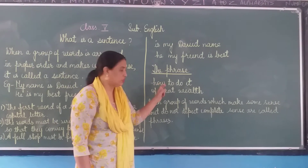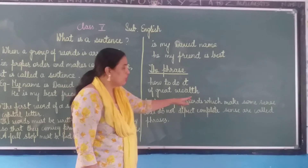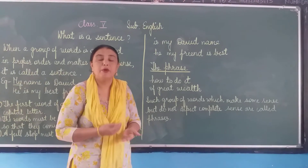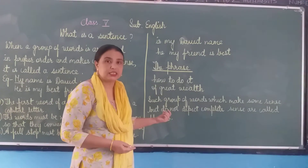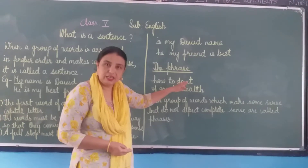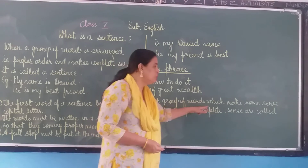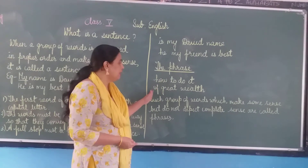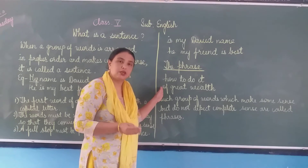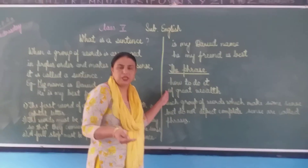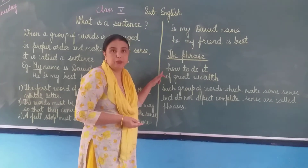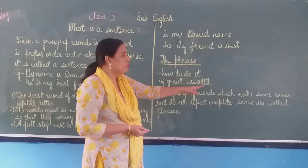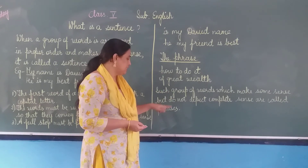So this is the difference between sentence and phrase. Such a group of words which makes some sense — yes, I am asking somebody 'how to do it', but it is not clear about which work I am asking, about whom I am asking, who is asking. Nothing is clear. And 'of great will' — yes, we can use it when giving ideas generally, but it is not giving complete meaning. Both examples are not giving complete sense — they are giving only incomplete sense. So such a group of words which makes some sense but does not depict complete sense are called phrases.